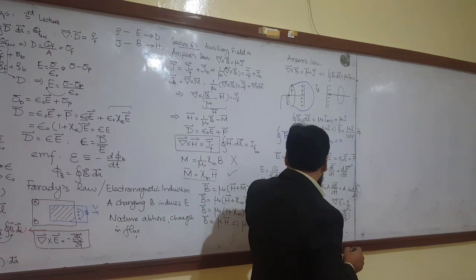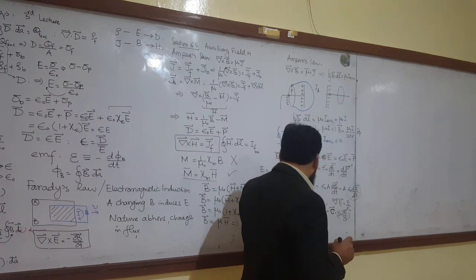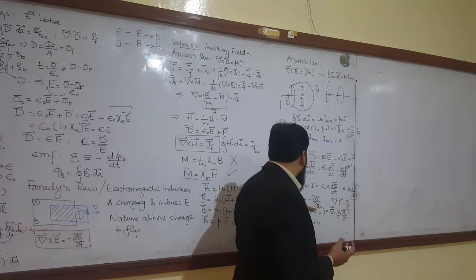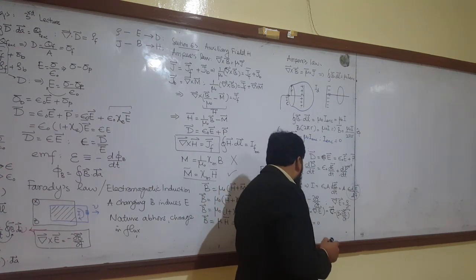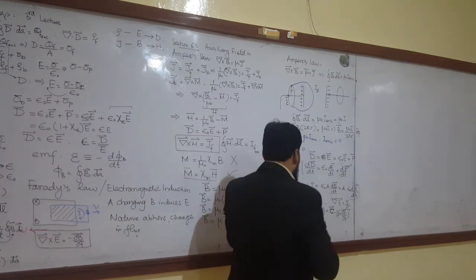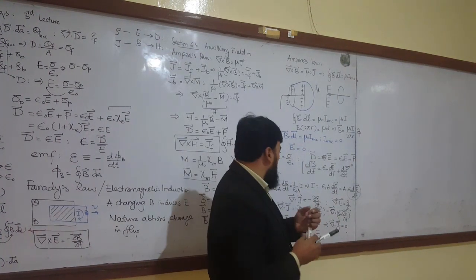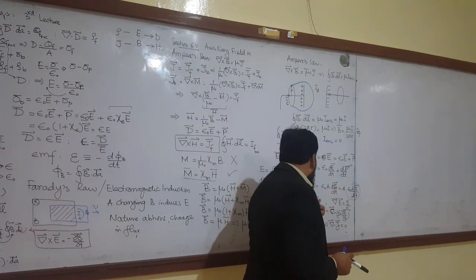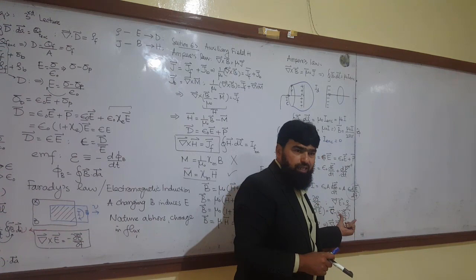In the continuity equation, this J here is only the conduction current. I will now write it differently — J with a special symbol — just to differentiate it. Because when I include the displacement term, the total J will be equal to J conduction plus J displacement. Then the divergence of this total J will be equal to zero. This means there will be no disturbance in rho with time. So the conduction current is accompanied by the displacement current as well.